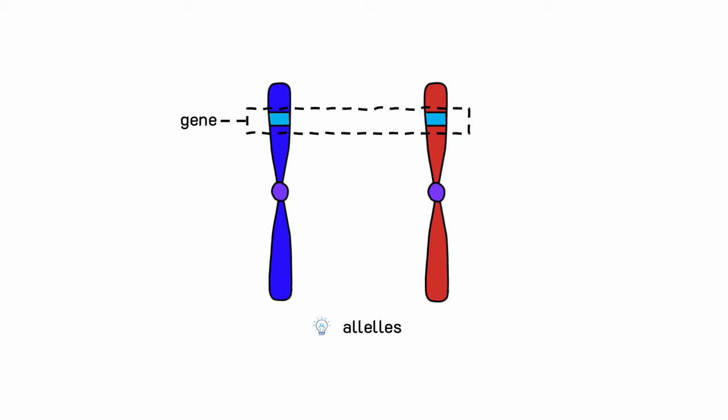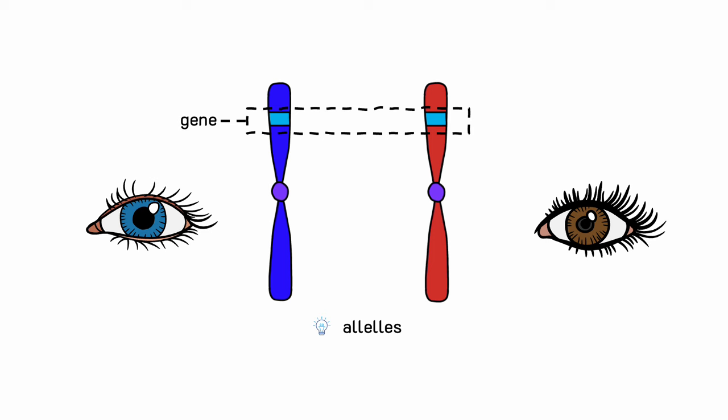Let's use the gene for eye color as an example. The gene codes for eye color on both chromosomes, but one allele may code for blue color and the other allele for brown color.